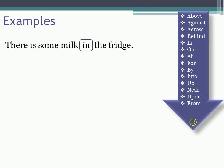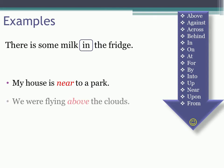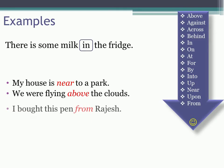Now, let's see some more examples like these. My house is near to a park. We are flying above the clouds. I bought this pen from Rajesh.